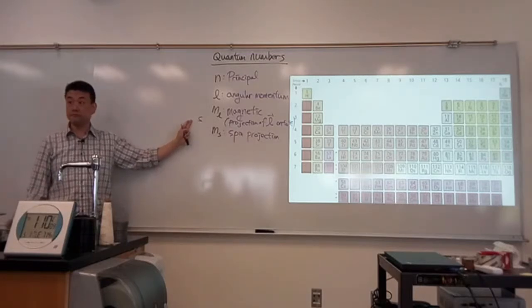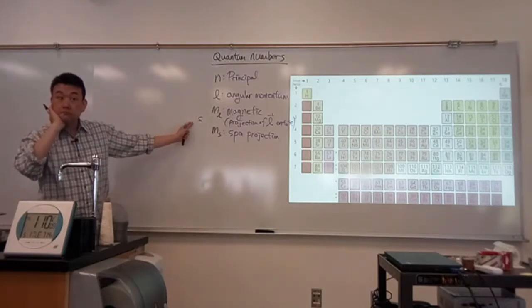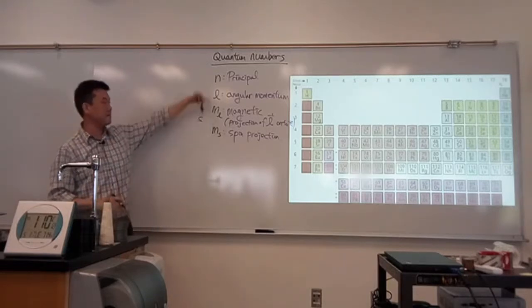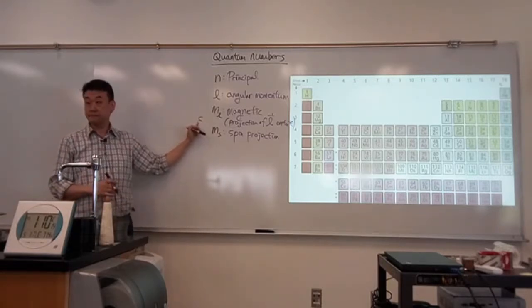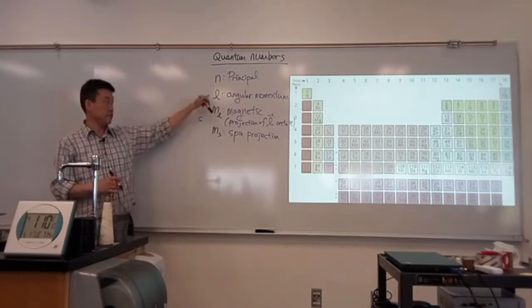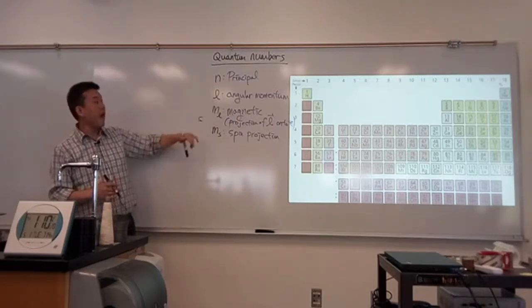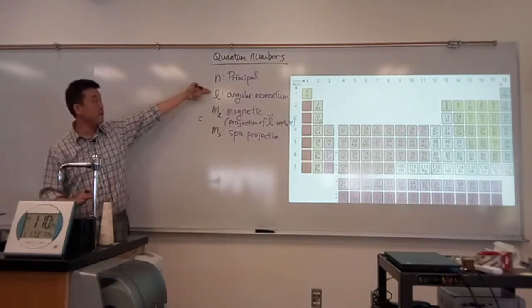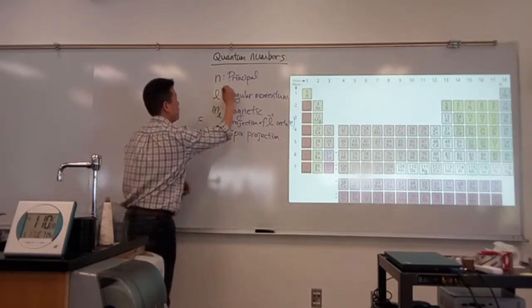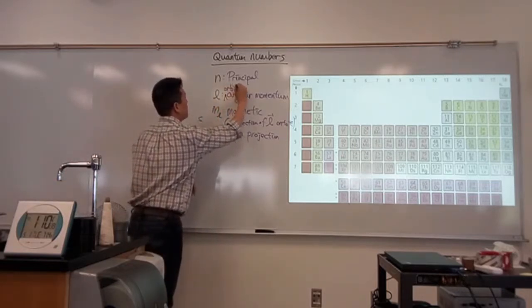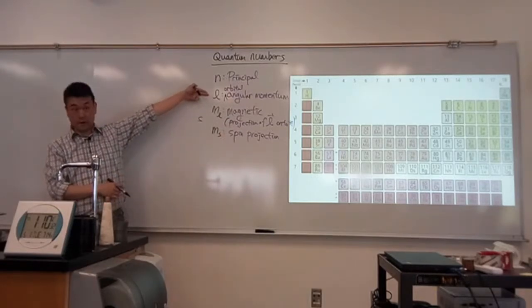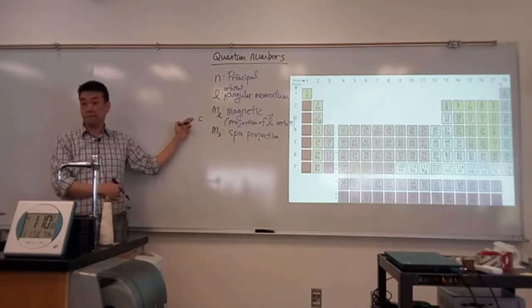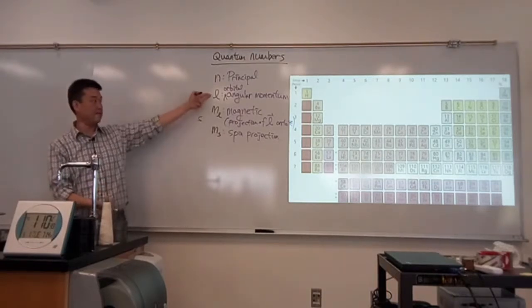Why am I not listing S as a separate quantum number? S is the spin angular momentum magnitude of the electron. L and S describe similar things: L is the magnitude of orbital angular momentum, S is the magnitude of spin angular momentum. So why list M sub L but not S itself?